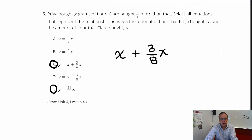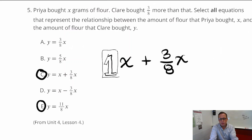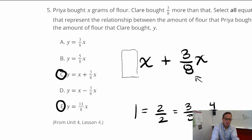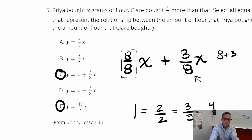Option E isn't so obvious, but it comes down to understanding the coefficient. There's always a 1 in front of x, and 1 can be written as 8/8 in fraction form. So 1 plus 3/8 equals 8/8 plus 3/8, which is 11/8. That's where the 11/8 comes from — 8 plus 3 is 11, giving you y equals 11/8 x.